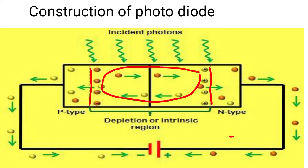Arrows falling on the depletion layer represent photons in the light. Whenever photons strike the depletion layer, they form electron-hole pairs, and due to that a current is formed in the photodiode — that current is the photocurrent. In a photodiode there are two types of currents: photocurrent and dark current. The total current equals photocurrent plus dark current.